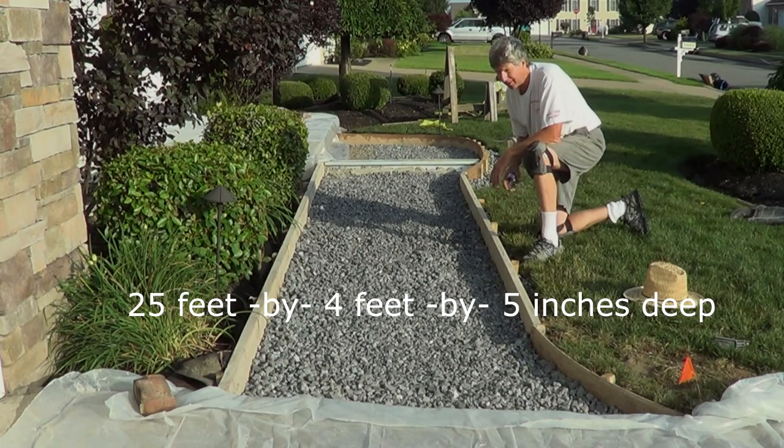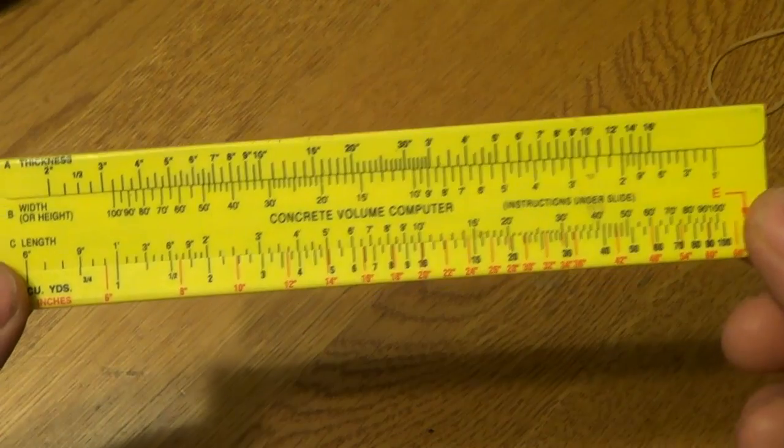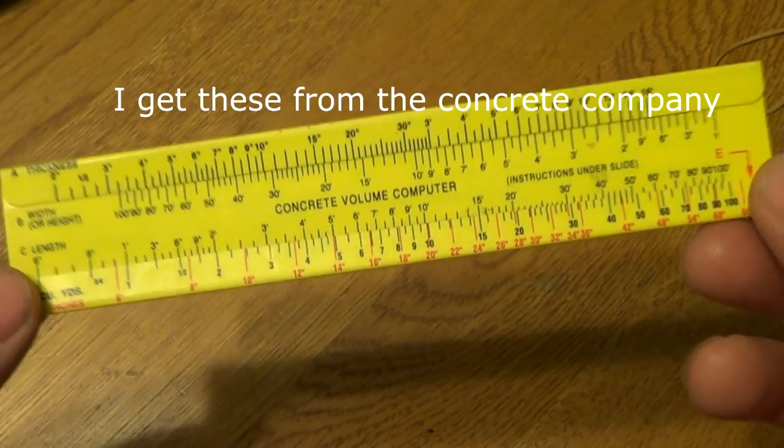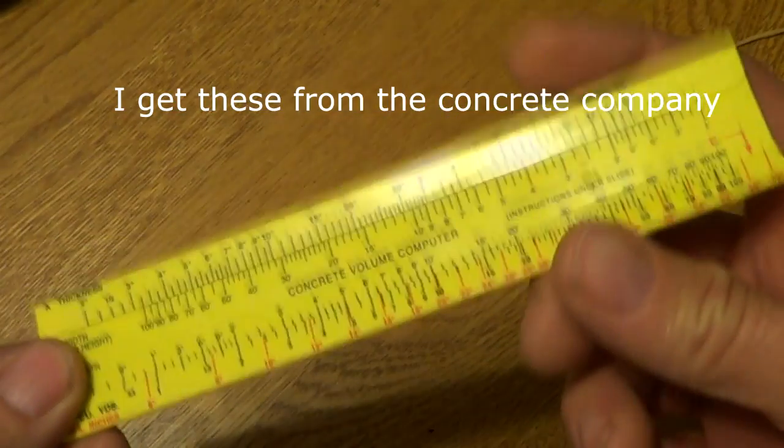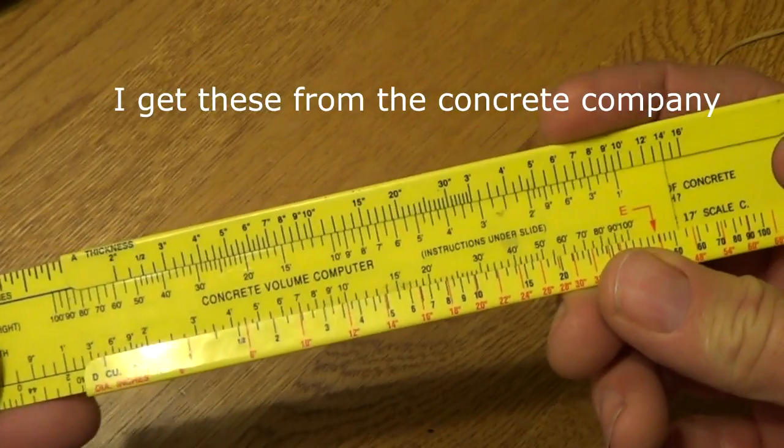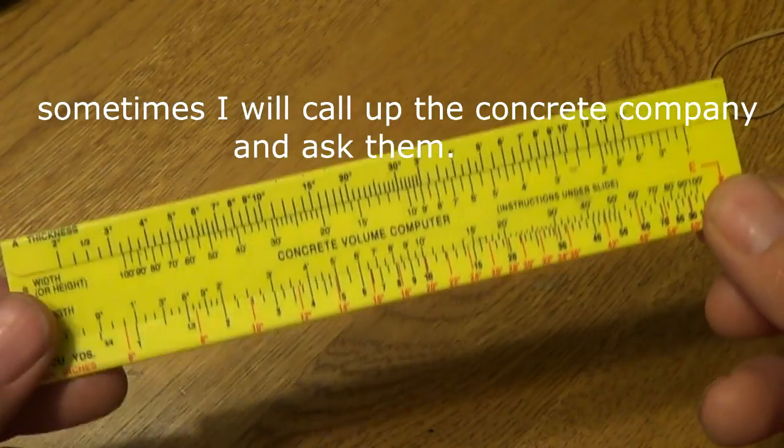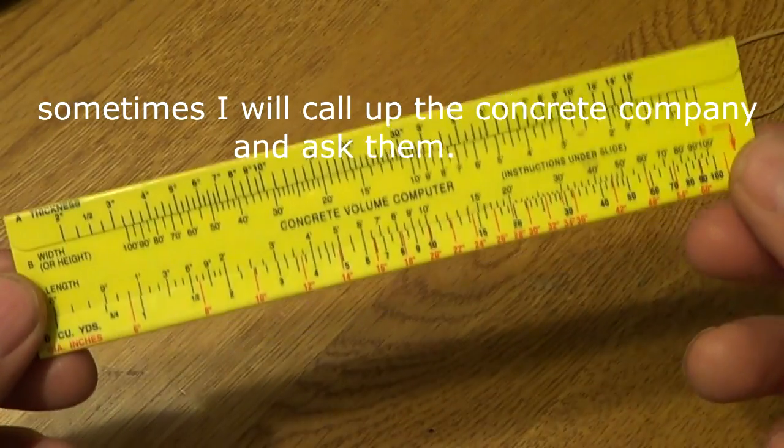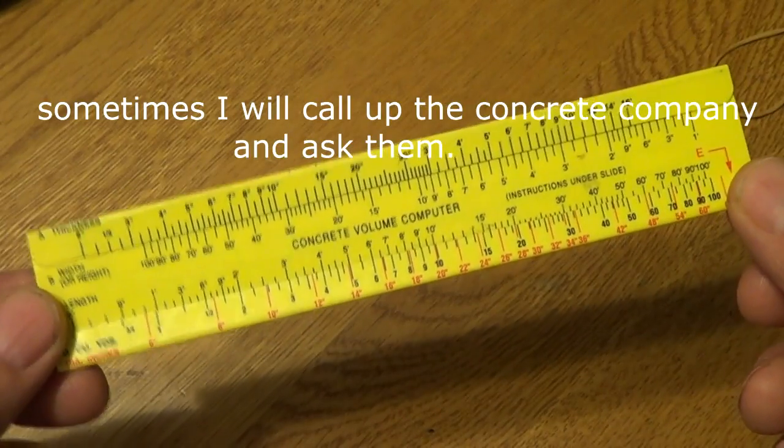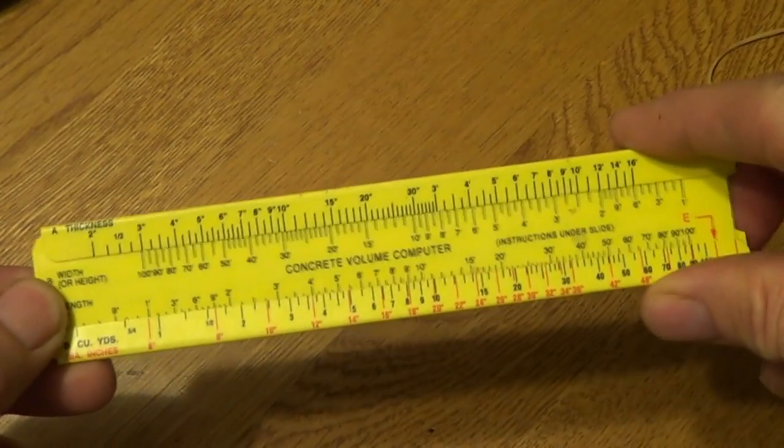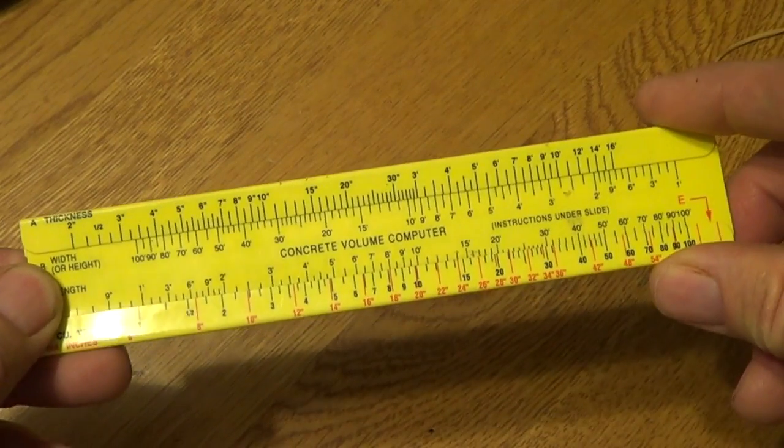I'm going to show you how I do it on the concrete calculator. Now in the real world of masonry, this is what I use 95% of the time. It's called a concrete calculator. Sometimes I'll just call up the concrete company and ask them. And we're going to do that first. And then I'm going to show you how to use this concrete calculator, plus a couple other ways of doing it.